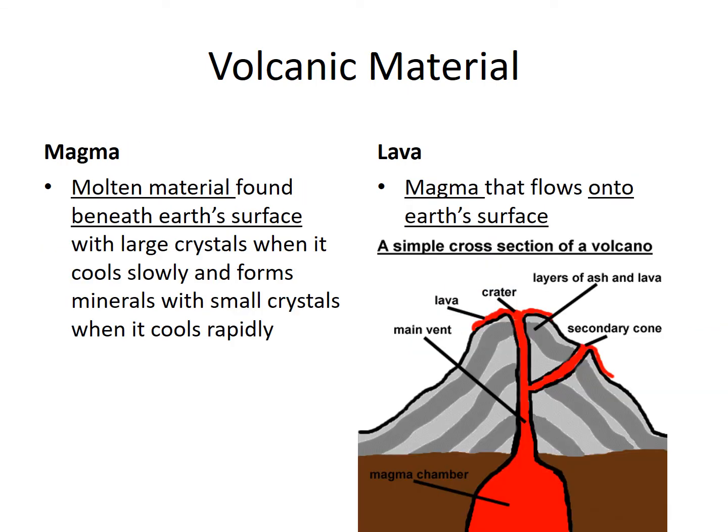Let's go back over the difference between magma and lava. Magma is found beneath the Earth's surface — it makes large crystals when it cools slowly and small crystals when it cools rapidly. Lava is magma once it flows onto the Earth's surface. So it's magma inside, lava outside.